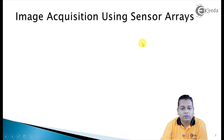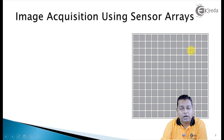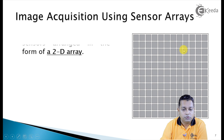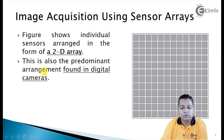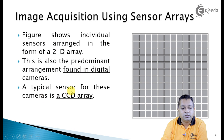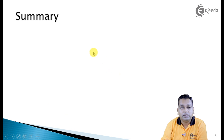The last type is image acquisition using sensor arrays. The diagram shows sensors arranged not only in one line but in both x and y dimensions, so no motion is required at all. This figure shows individual sensors arranged in the form of a two-dimensional array. This is the predominant arrangement found in digital cameras today; the typical sensor is a charge-coupled device array, abbreviated as CCD array.